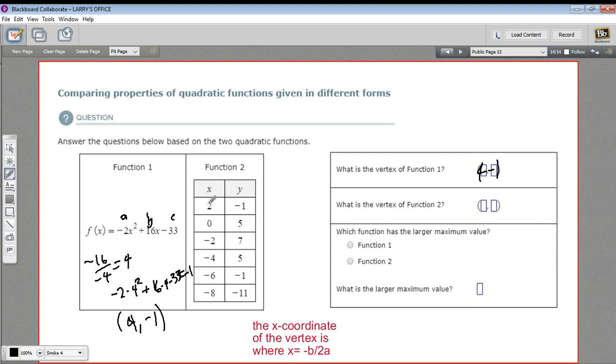Let's look for the vertex in function 2. Here, it might be a little trickier to see. It might help to sketch. We don't have to be accurate about this, but we can just sketch a graph. So 2, negative 1 is on this graph. 0, 5 is on this graph. Negative 2, 7 is on this graph. Negative 4, 5. Oh, hmm. So going down again. And negative 6, negative 1. And negative 8, negative 11. So something like that.